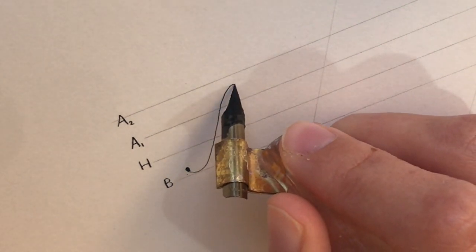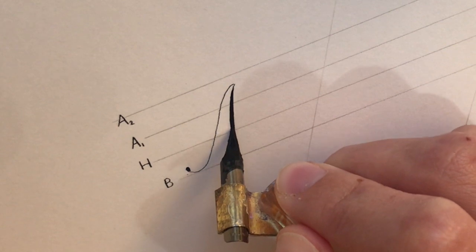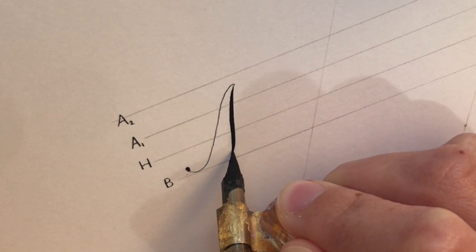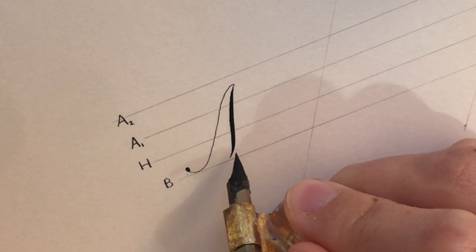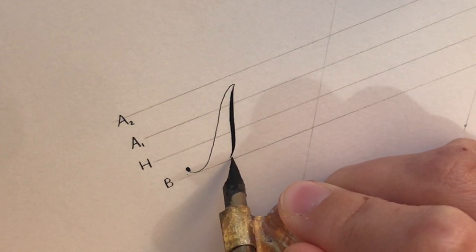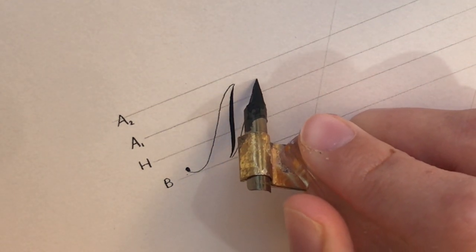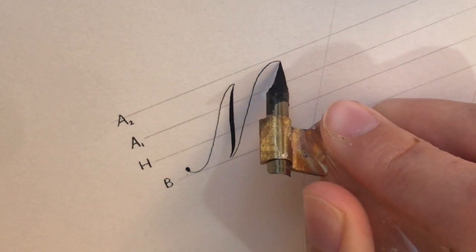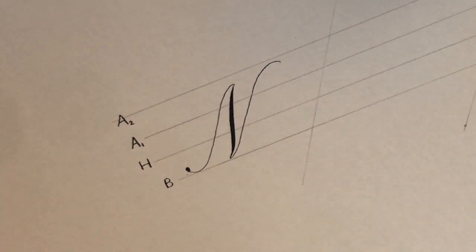Then go back to the top and add a swelled stroke down. This stroke is almost perpendicular to the baseline. Lift again at the baseline, get more ink maybe, then draw a hairline back up. You're still along the 55 for this hairline and maybe connect those a little bit better at the bottom. That is the first capital N.